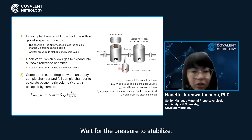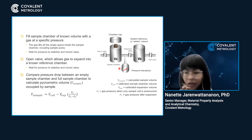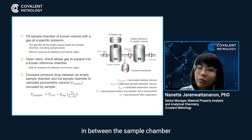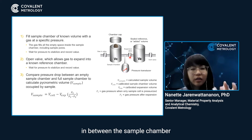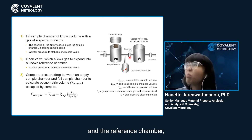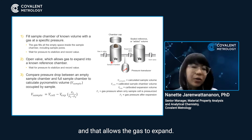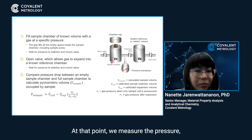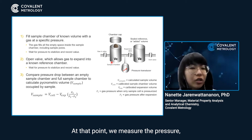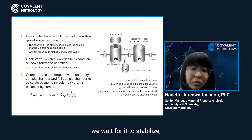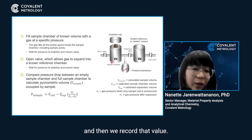We wait for the pressure to stabilize and record that value. Then we open up a valve between the sample chamber and the reference chamber, allowing the gas to expand. At that point, we measure the pressure, wait for it to stabilize, and record that value.